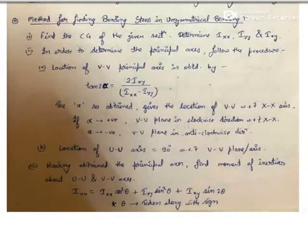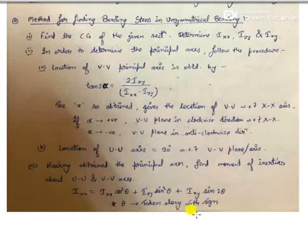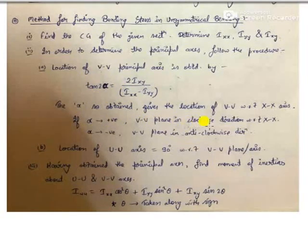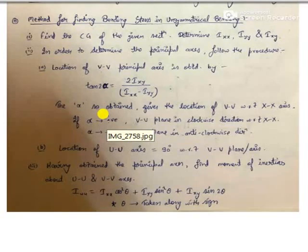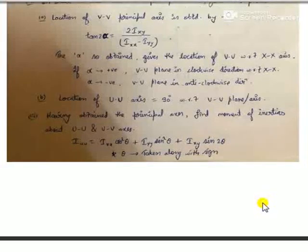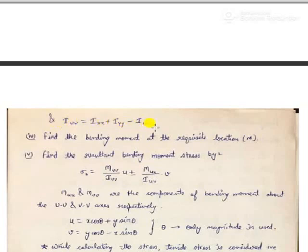The sign convention is: if alpha comes out positive, the VV plane is in the clockwise direction with respect to the xx axis. IVV can be obtained by Ixx + Iyy − IUU, similar to the stress invariance concept studied for principal stress and strain. Having obtained the axes about which rotation takes place and the moments of inertia about those axes, we calculate the components of the bending moment acting in the two directions.